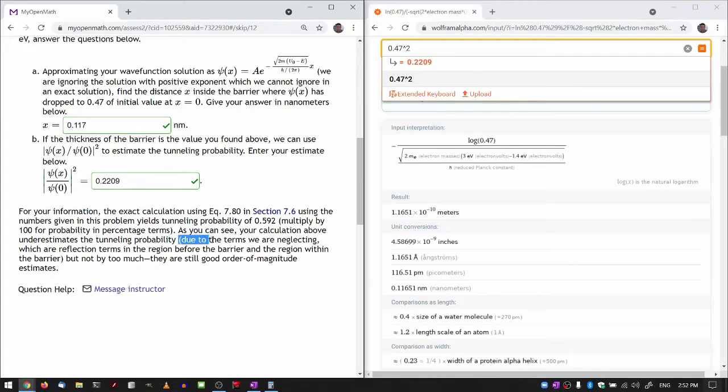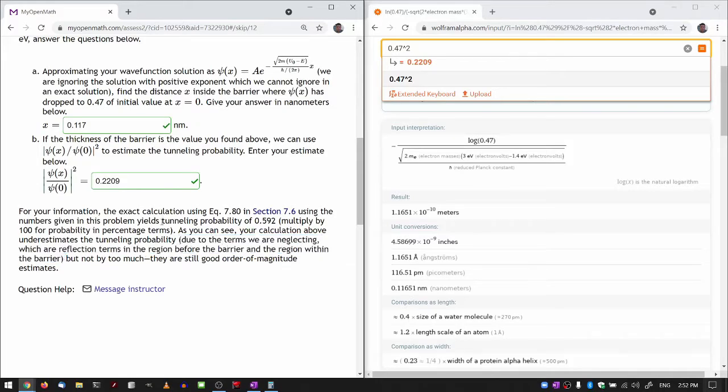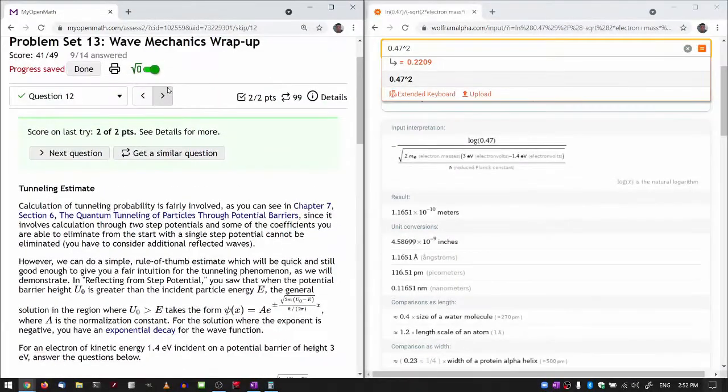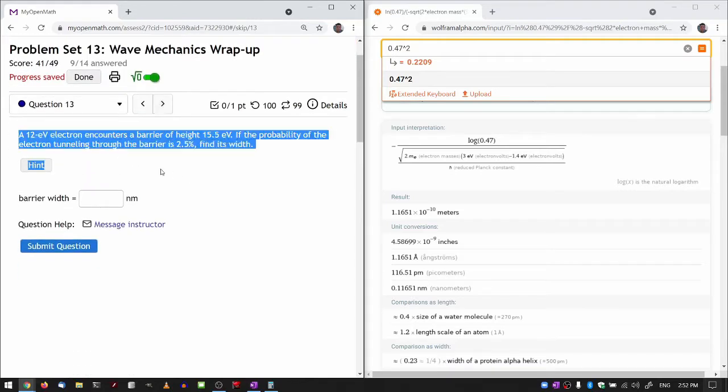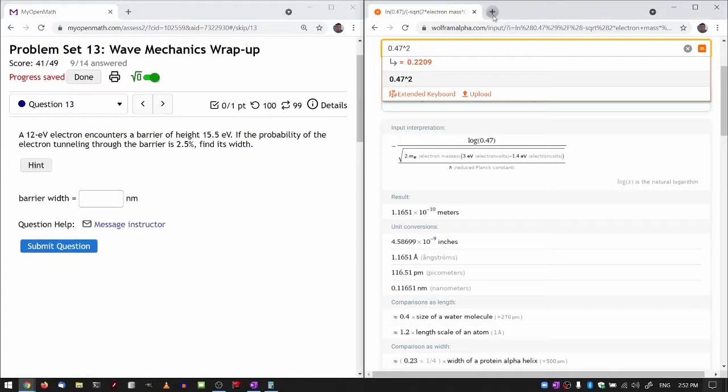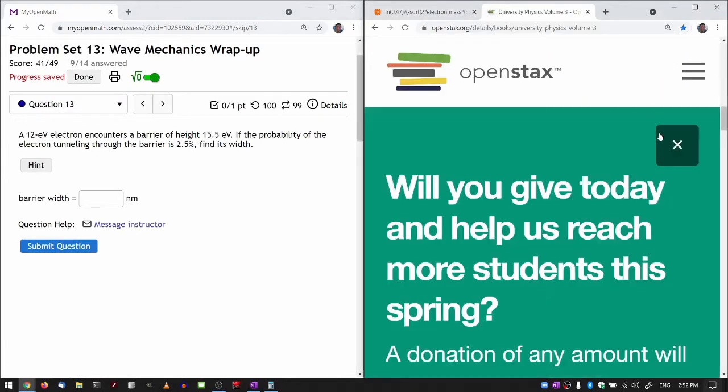The terms that we are neglecting, as referred to here, is the reflected term. When you look at the textbook's treatment of quantum tunneling, which you actually will have to look at to answer this question, you can see what I mean by reflected term.